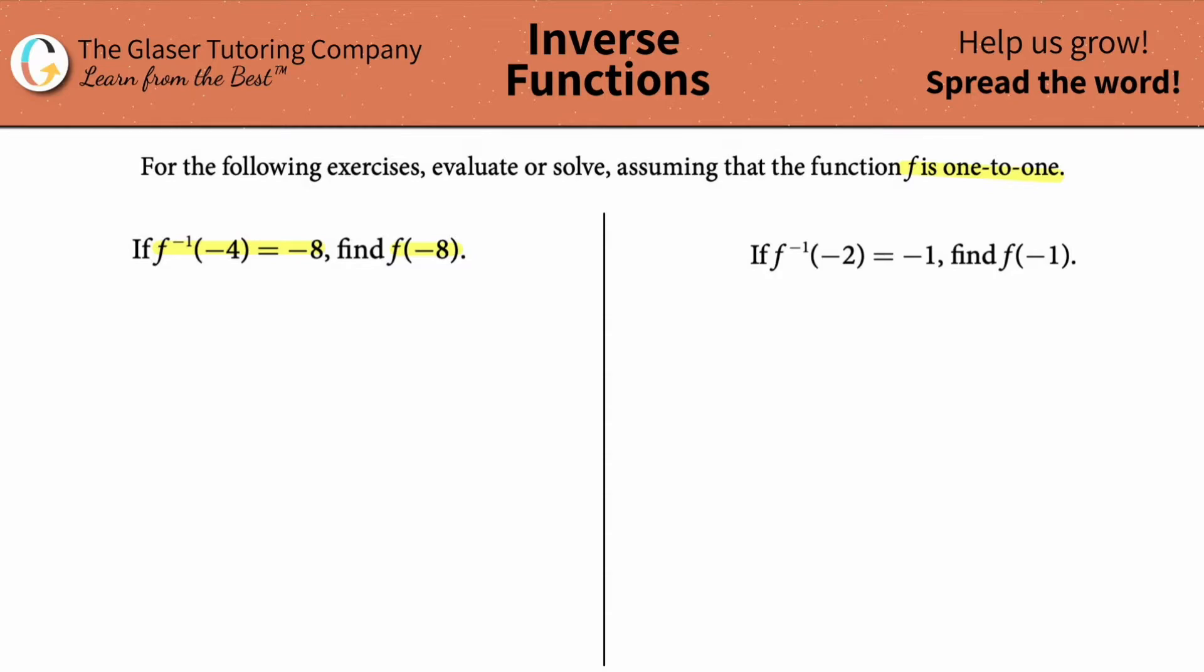So we talked about already that this technically represents X and this technically represents Y. So for the inverse function then, the X value is negative 4 and the Y value is negative 8. So in other words, if I had to write the coordinates now of the point here that they're talking about, for my inverse function, it should be negative 4 comma negative 8.